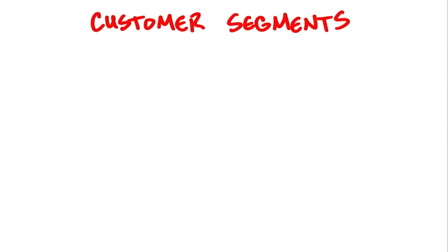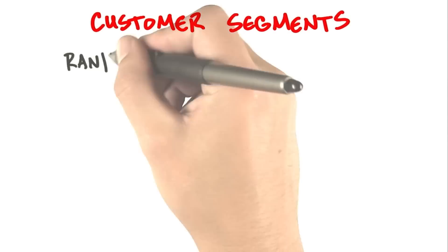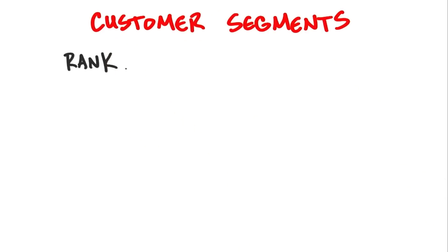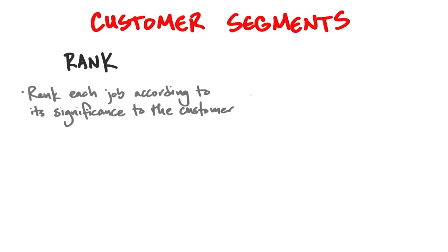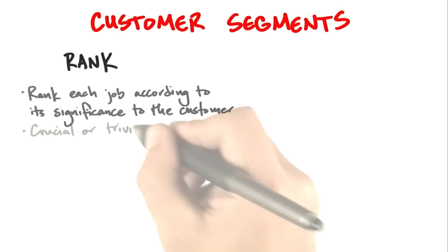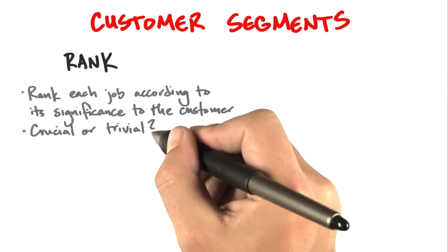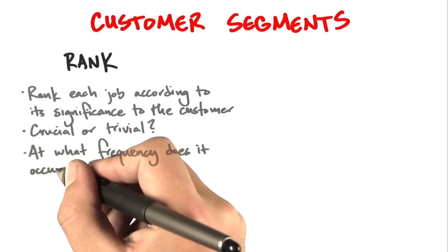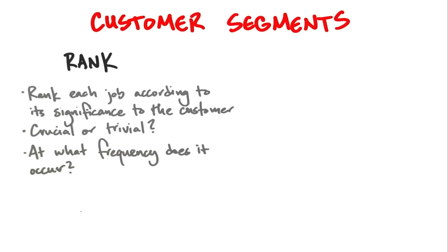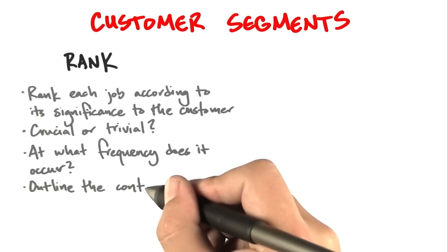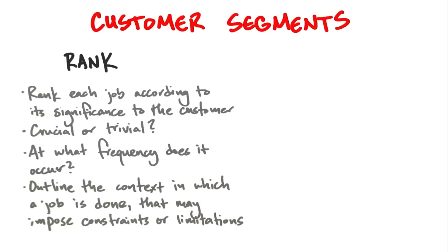A simple way to start with your customer segment hypotheses is to rank each job according to what you believe is its significance to the customer. On day one, you get to guess: is it crucial or trivial? Take a guess about how frequently it occurs, and outline what specific context a job gets done.